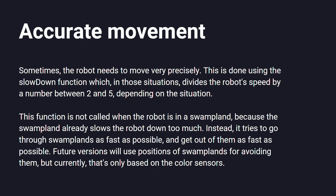We don't want the robot to walk into a trap or overshoot a super object, so it needs to slow down when it gets near those things. That's what the slowdown function does. It's turned off at some points because those already slow the robot down.